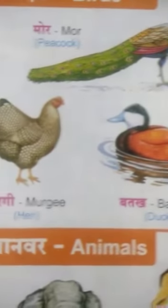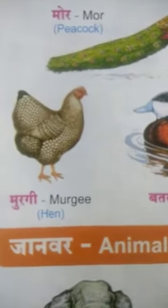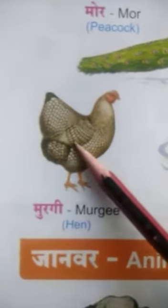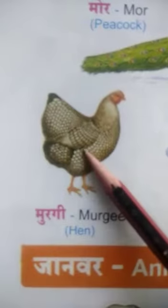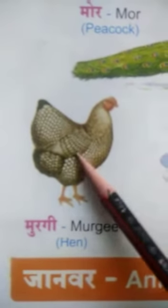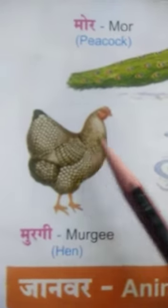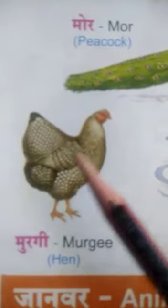Next is Hen. This is Hen. Murgi — Hen. Murgi — Hen.